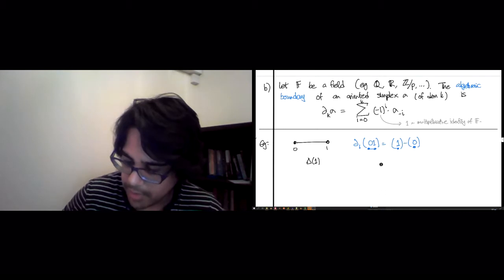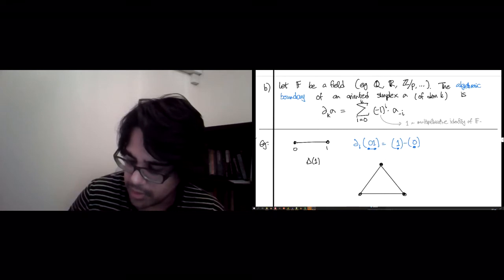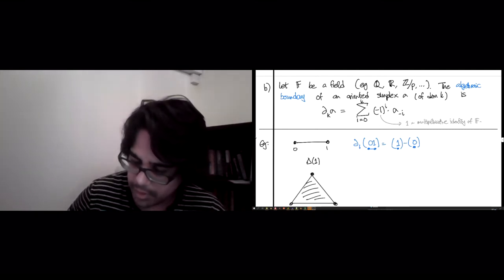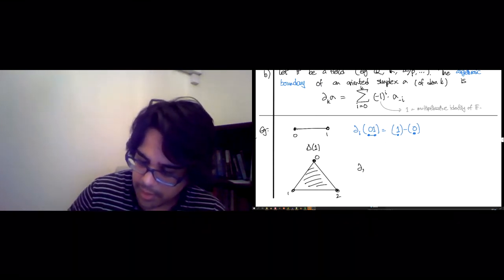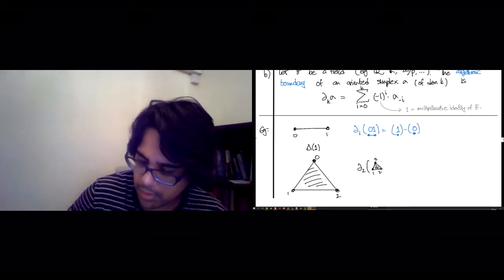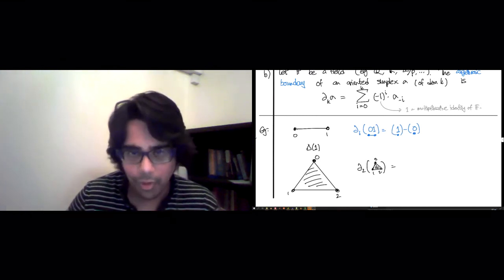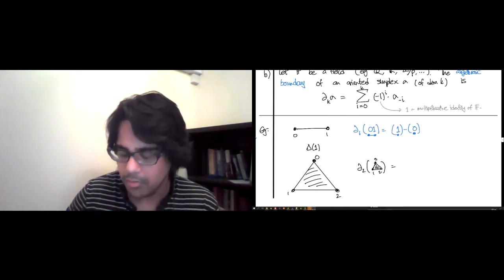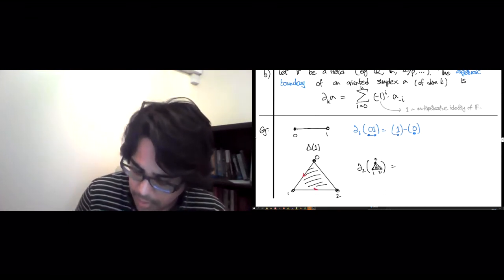If you tried the same thing with the solid 2 simplex. So this, but it's all shaded in. Let's give everything a label. So this is 0, 1, 2. Then its boundary of this whole thing, 0, 1, 2. That two-dimensional simplex, the unique two-dimensional simplex here is, if you follow the formula, it's going to be 0,1 plus 1,2 minus 0,2.